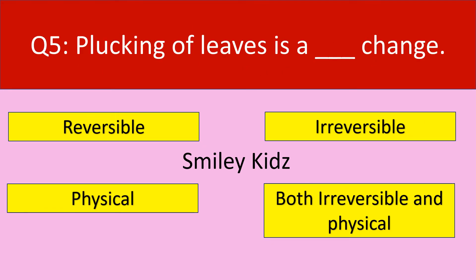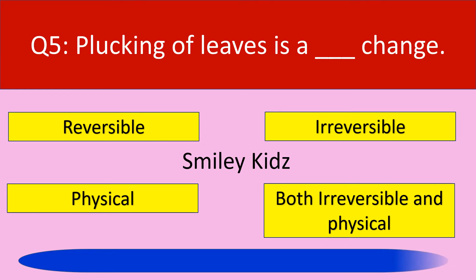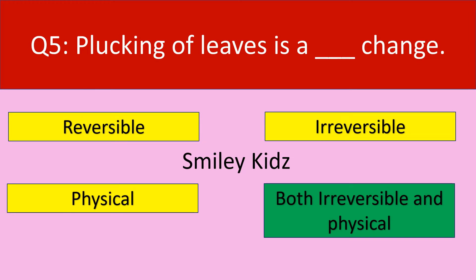Plucking of leaves is a dash change. Options: reversible, irreversible, physical, both irreversible and physical. Your time starts now. Your time is up and the correct answer is both irreversible and physical. Plucking of leaves is an irreversible change as well as a physical change.